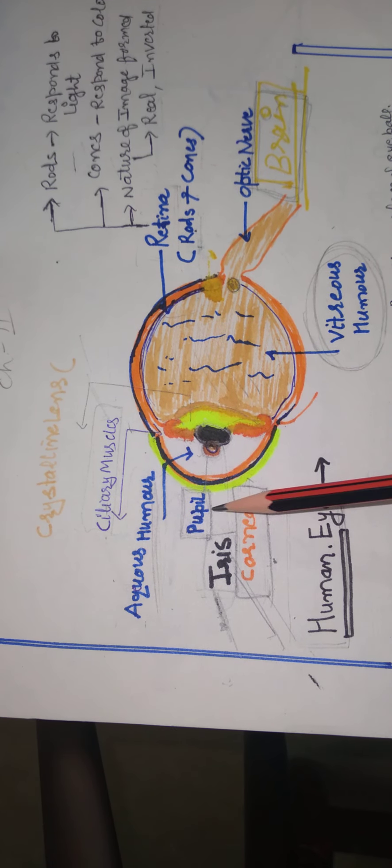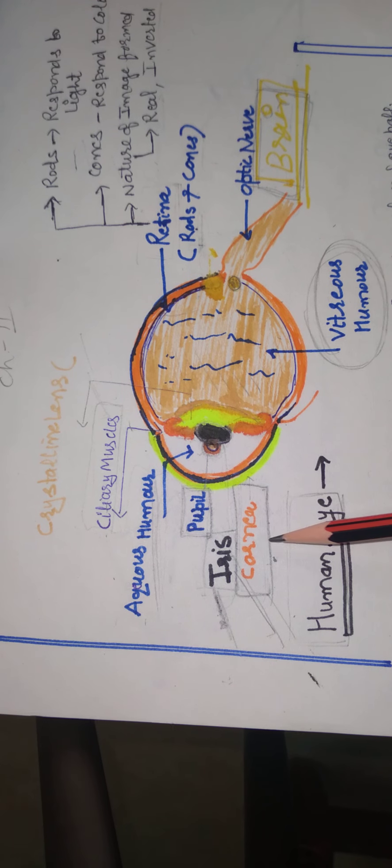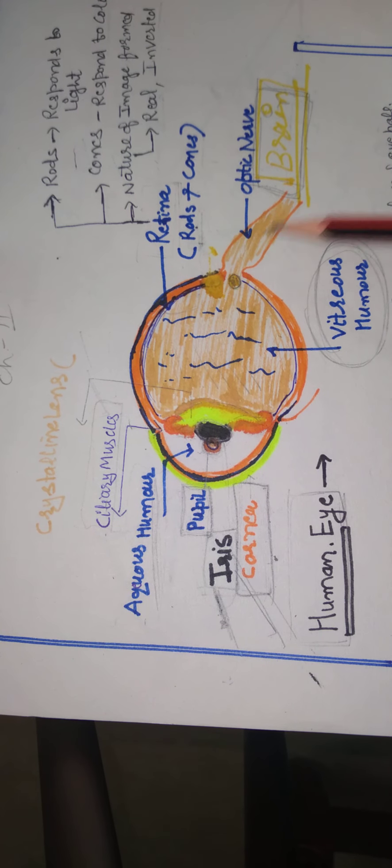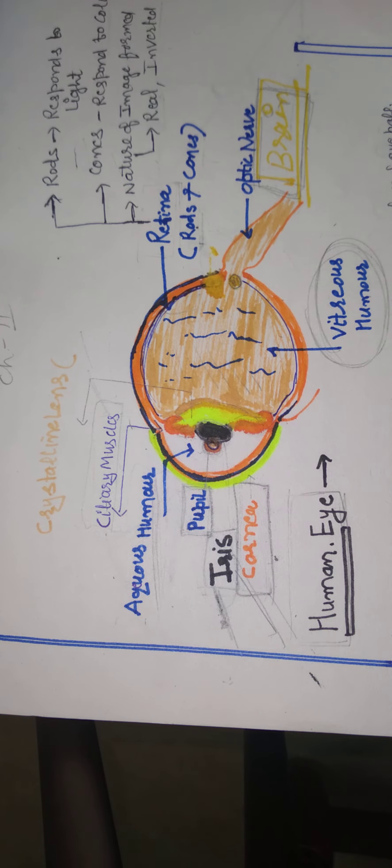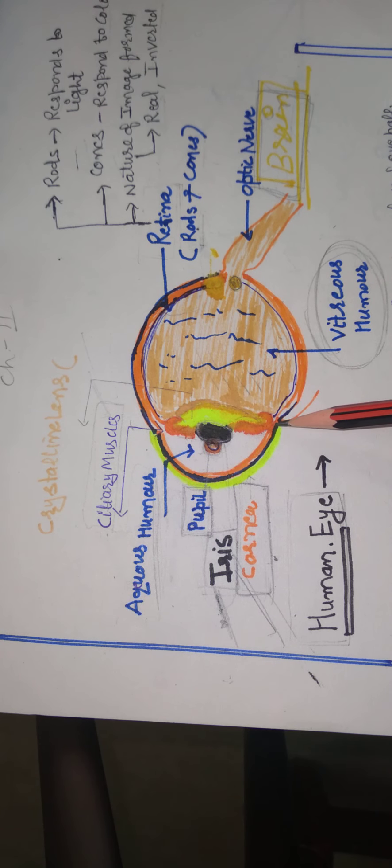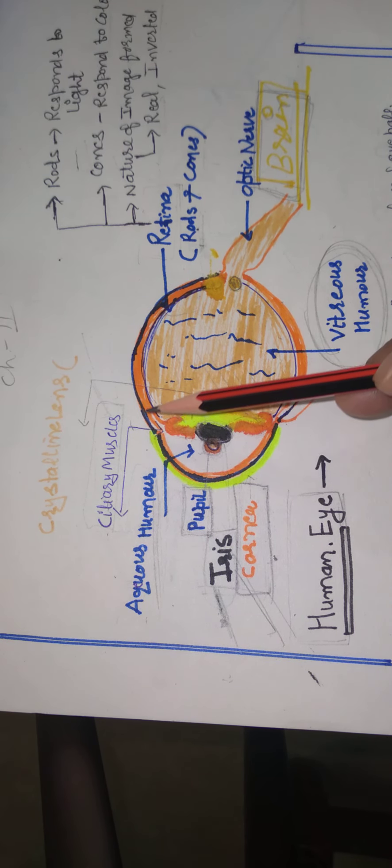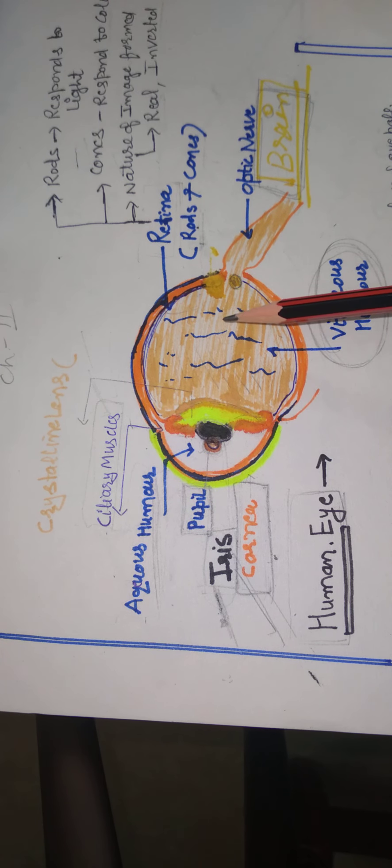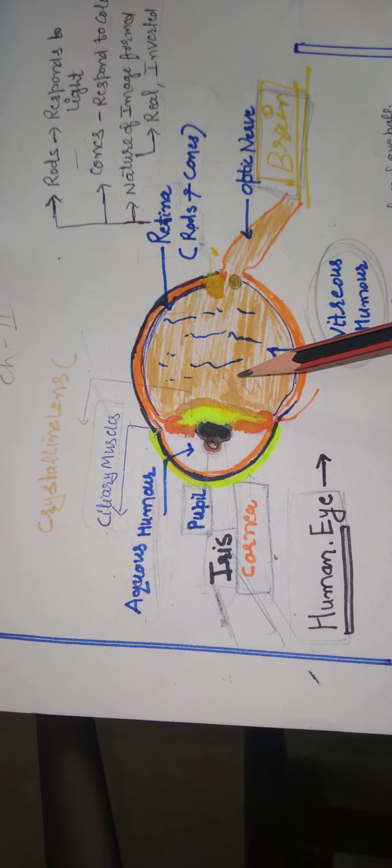Aqueous humor, pupil, iris, cornea, retina, optic nerve, vitreous humor. It is one of the important instruments in our body which helps us to see the colorful world.